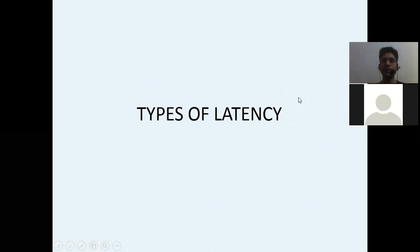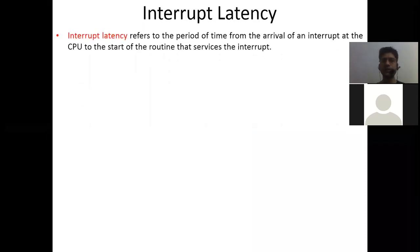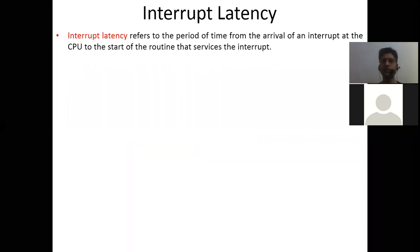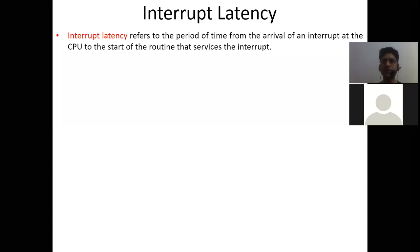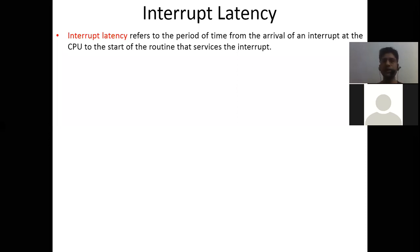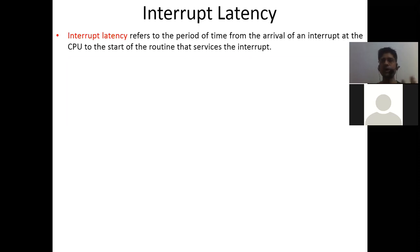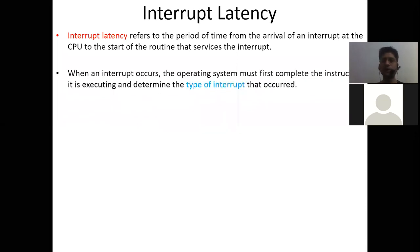There are two types of latency. The first is interrupt latency. Interrupt latency refers to the period of time from the arrival of an interrupt at the CPU to the start of the routine that services the interrupt. For example, if you are working on something and your younger brother knocks and interrupts you, the time from when he interrupts you to when you service his request is the interrupt latency.